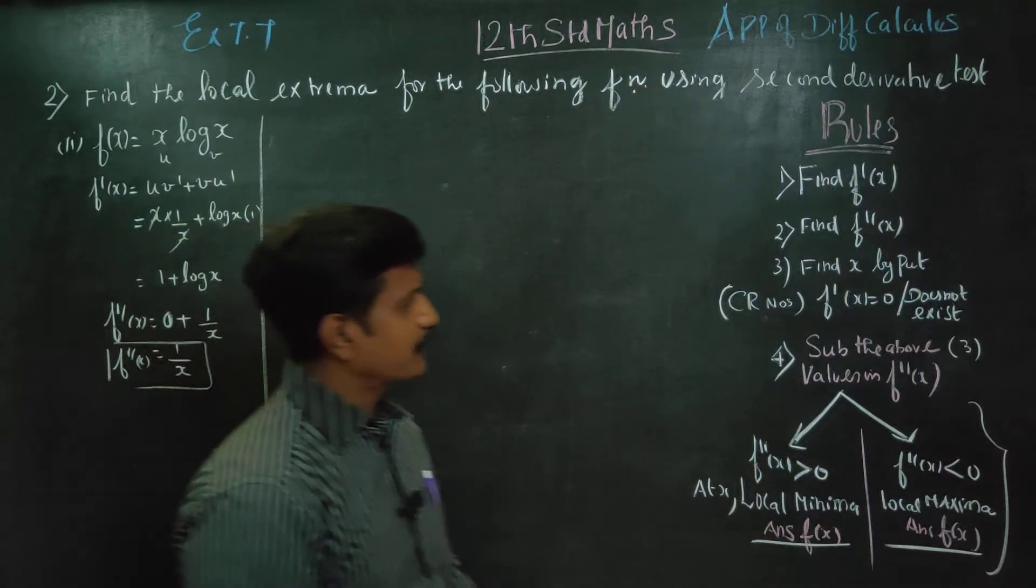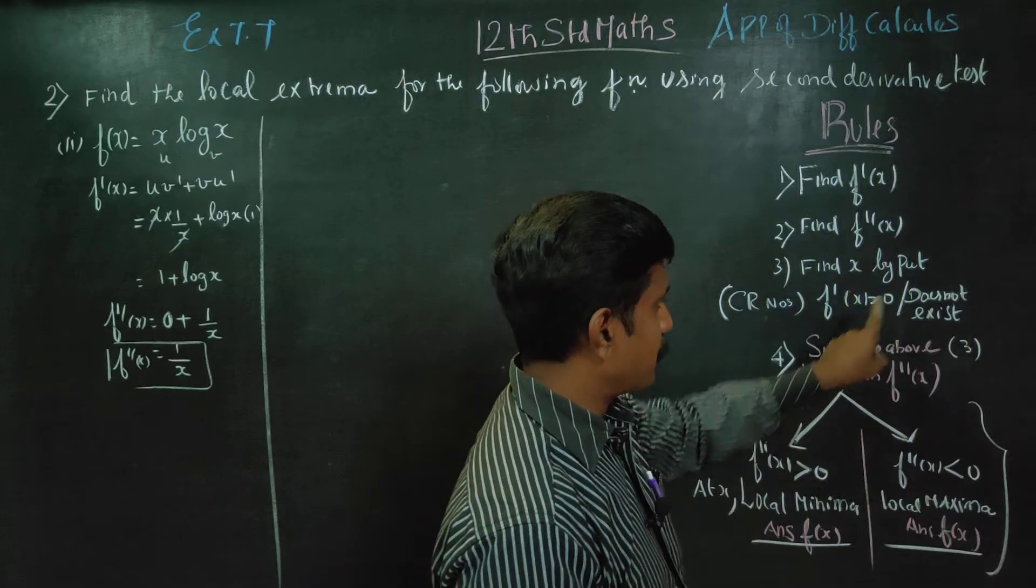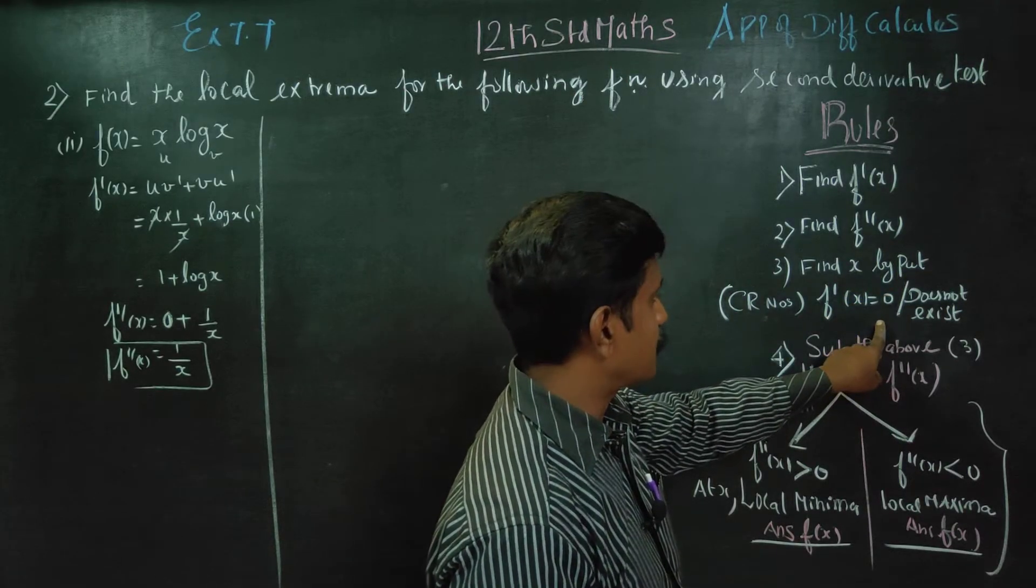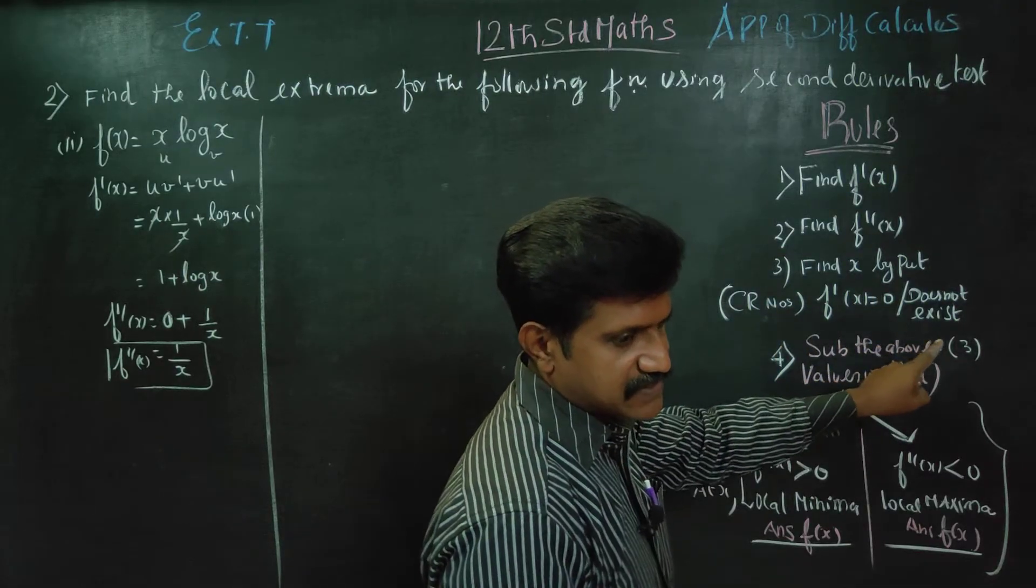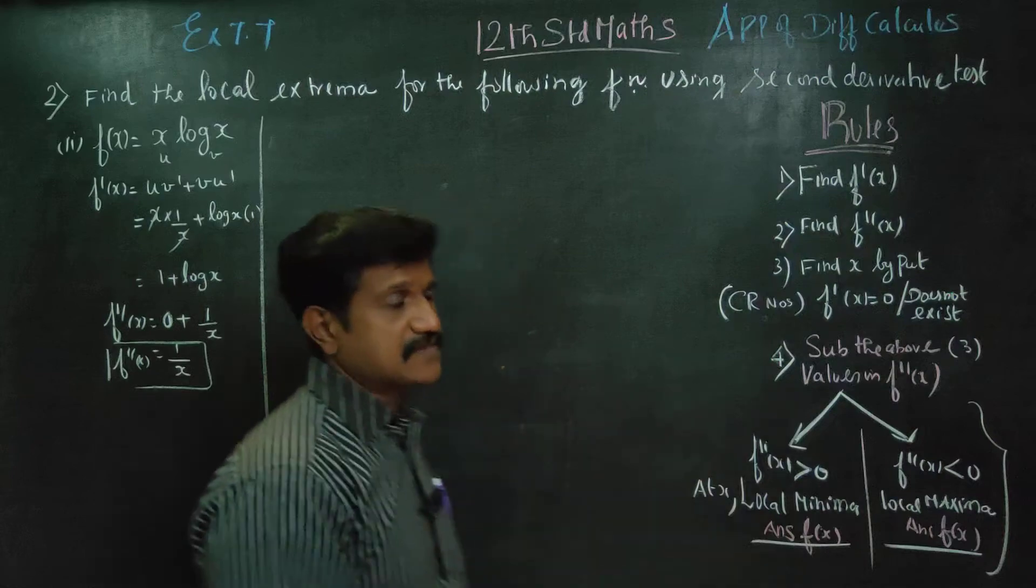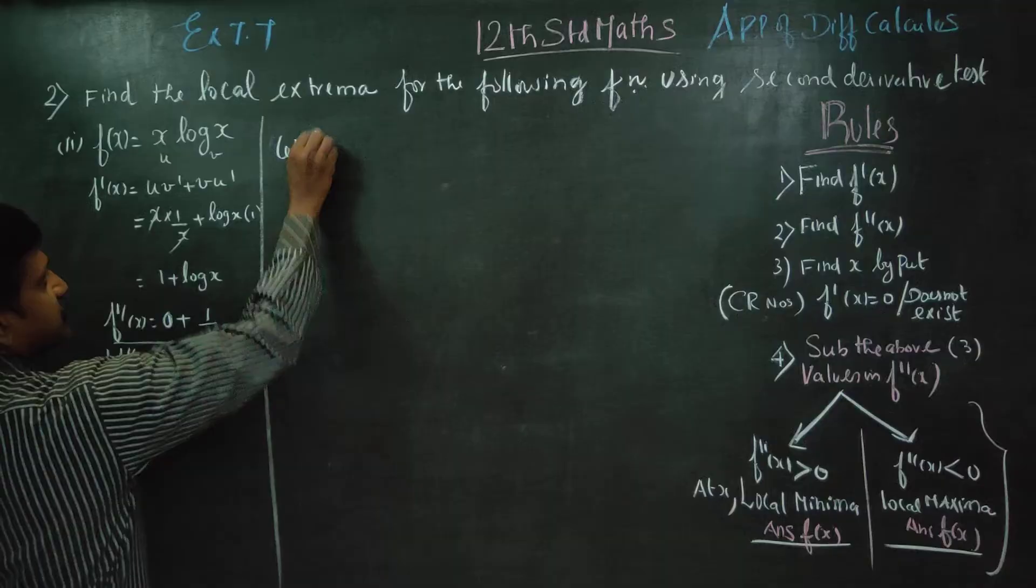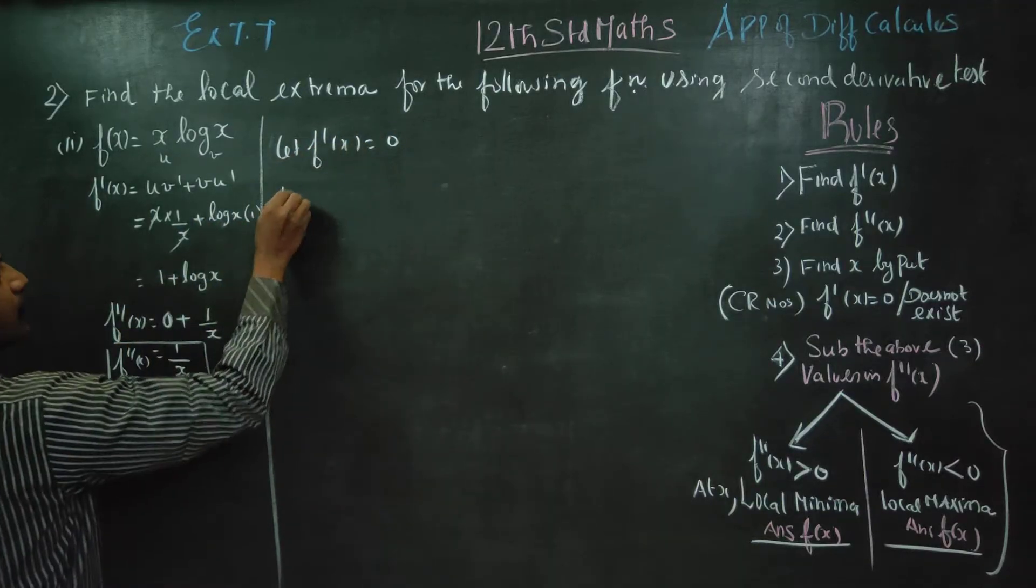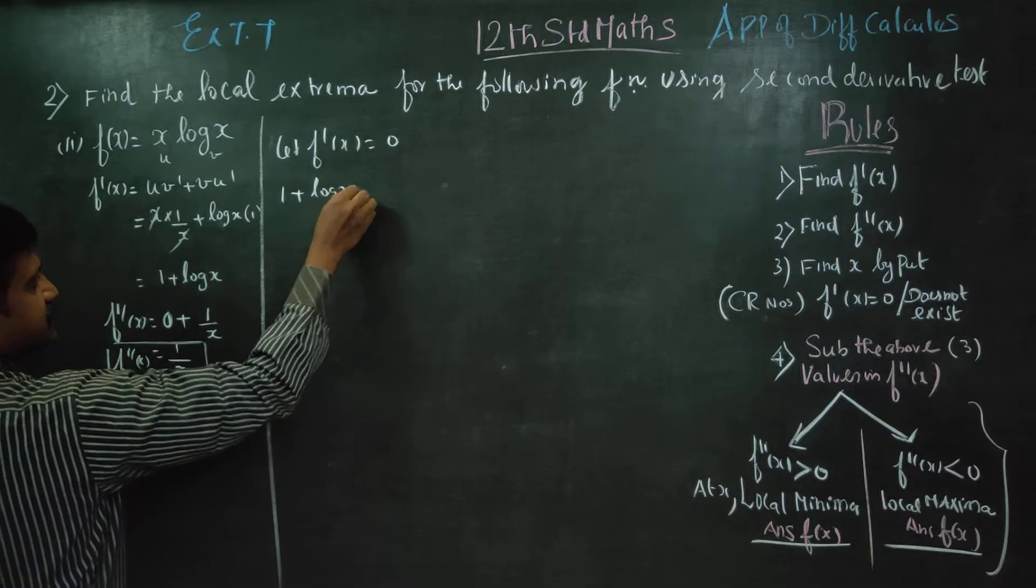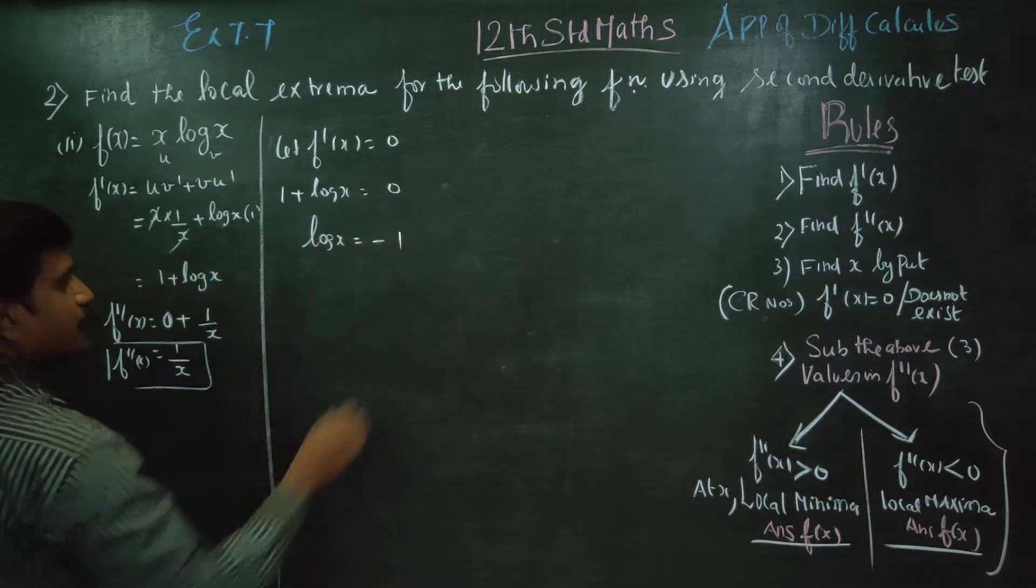After this, find x by putting f'(x) equal to 0, or find the critical numbers. There are two chances: f'(x) = 0 or f'(x) does not exist. Let f'(x) = 0. Then 1 + log x = 0, so log x = -1.